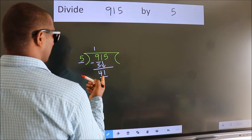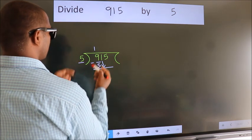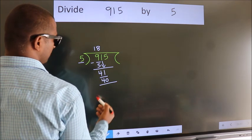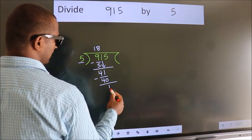A number close to 41 in the 5 table is 5 times 8, 40. Now we subtract. We get 1.